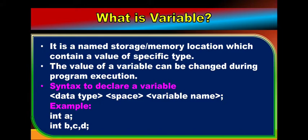The value of a variable can be changed during program execution — suppose at the beginning a variable contains some value, later on during execution that value can be changed. The syntax to declare a variable is: data type, one space, variable name, then semicolon. Example: int a; If you want to declare multiple variables of a single data type, you can write them in a single line separated by commas, like: int a, b, c, d;